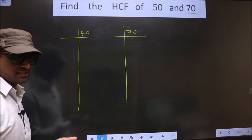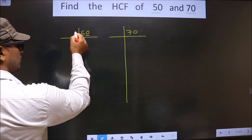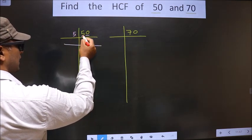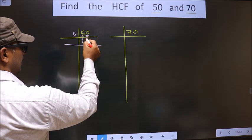Okay, next. For this number, last digit is 0, so we take 5 here. First number is 5. When do we get 5 in the 5 table? 5 once 5. This 0 carried down.